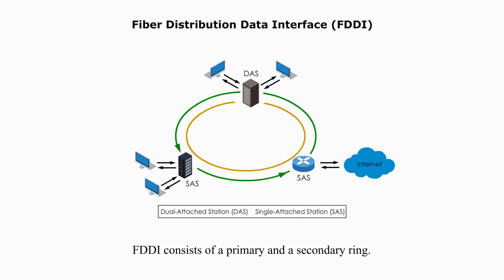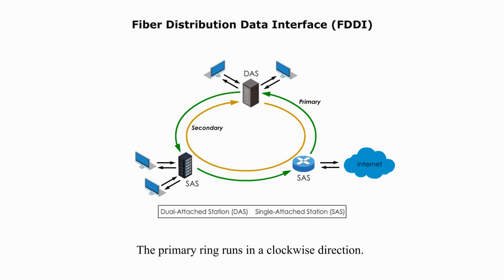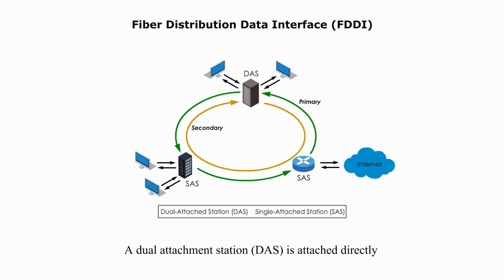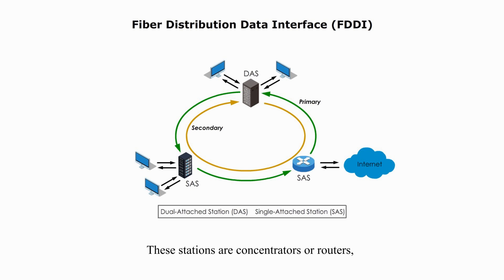FDDI consists of a primary and secondary ring. Traffic on each ring flows in opposite directions — the primary ring runs clockwise and the secondary ring runs counterclockwise. A Single Attachment Station (SAS) is attached to the primary ring, while a Dual Attached Station (DAS) is attached directly to both rings. These stations are concentrators or routers, which are the connecting points to computers or the internet.